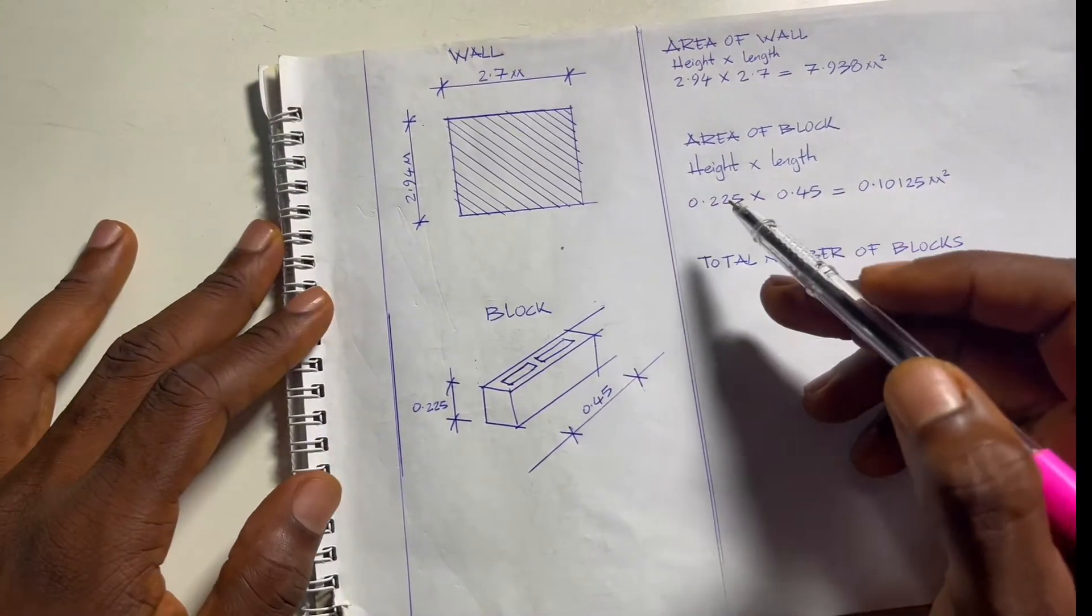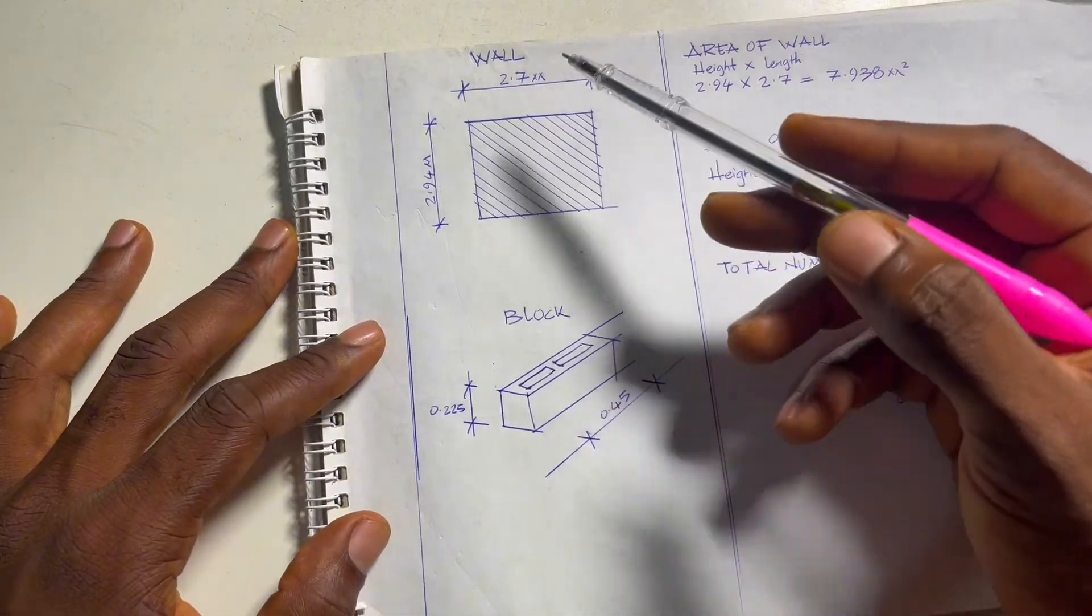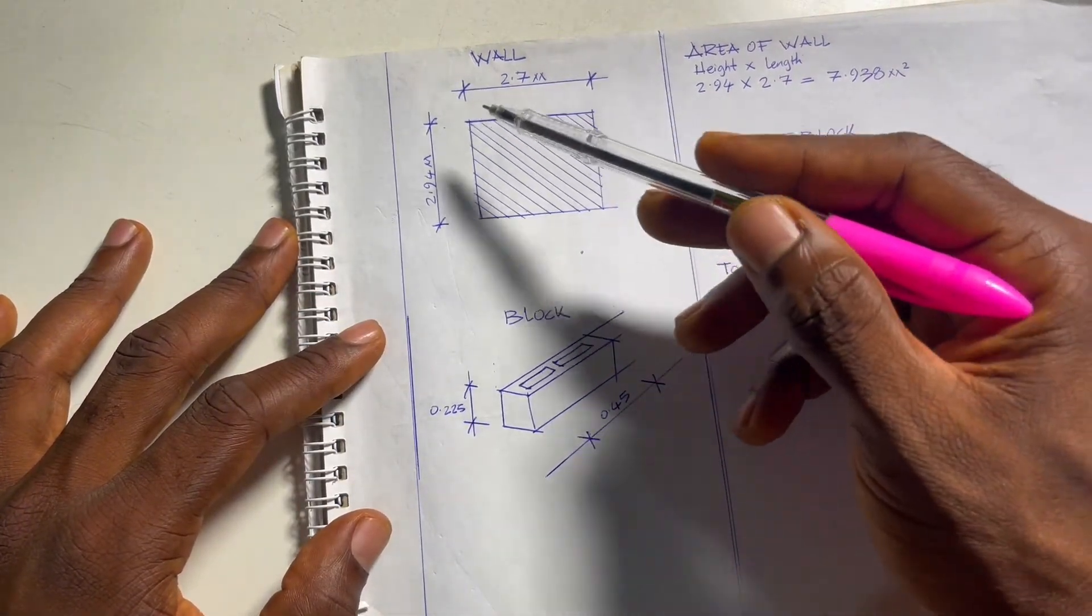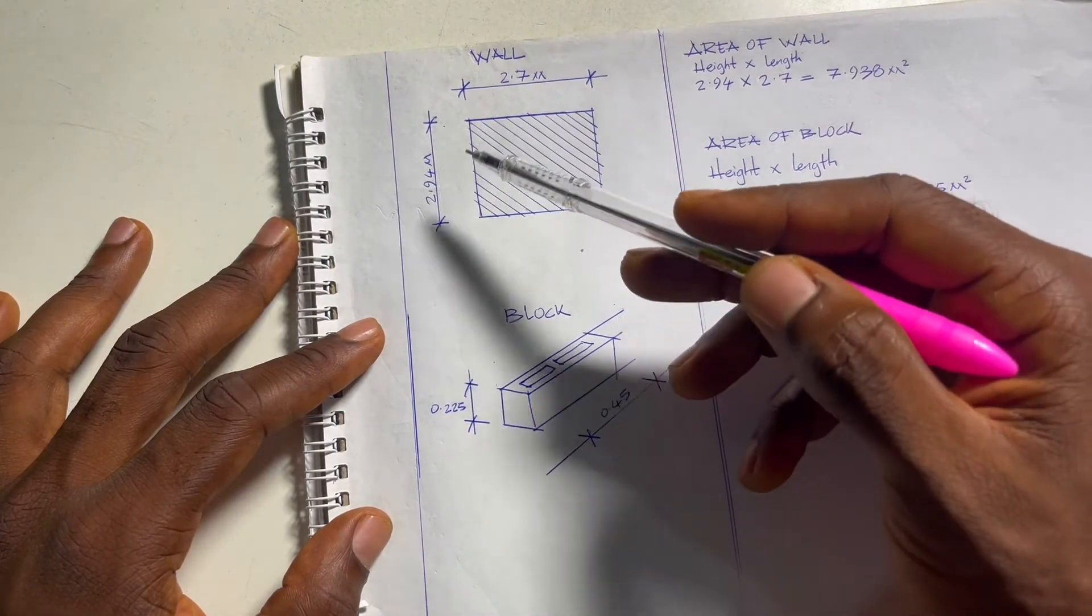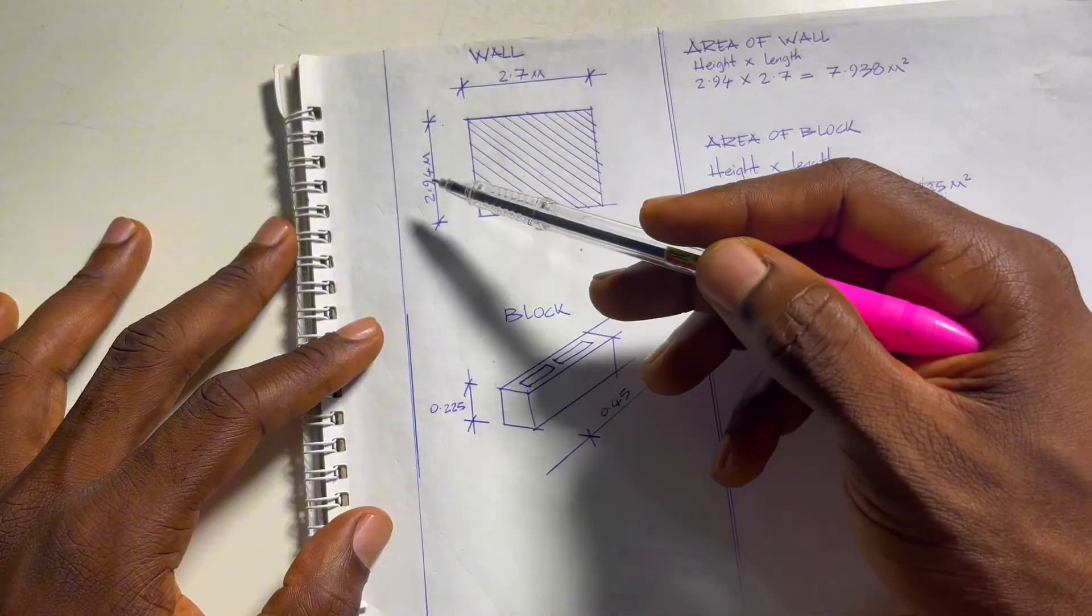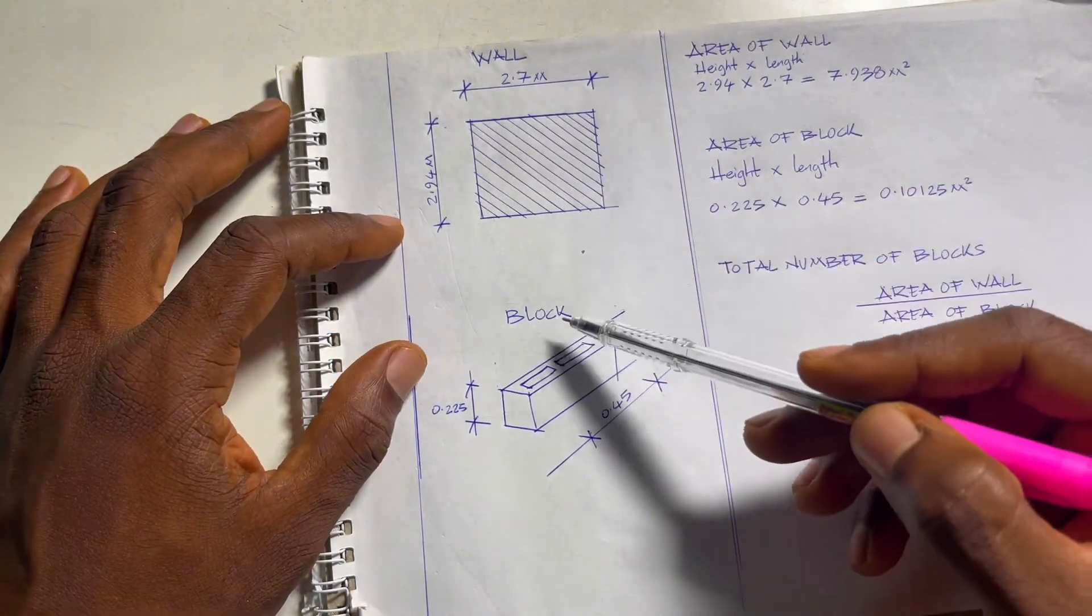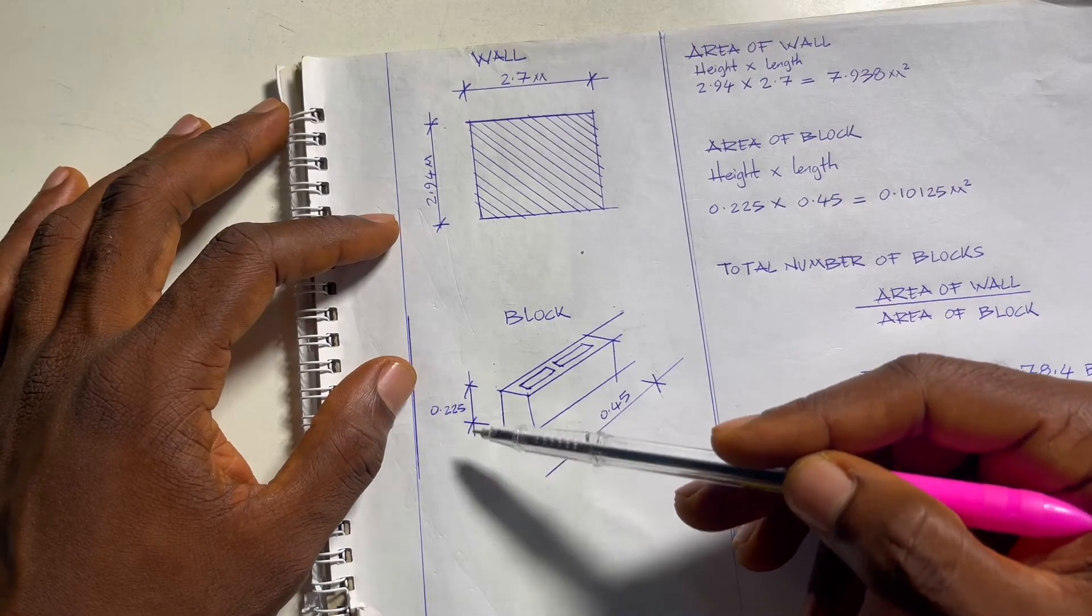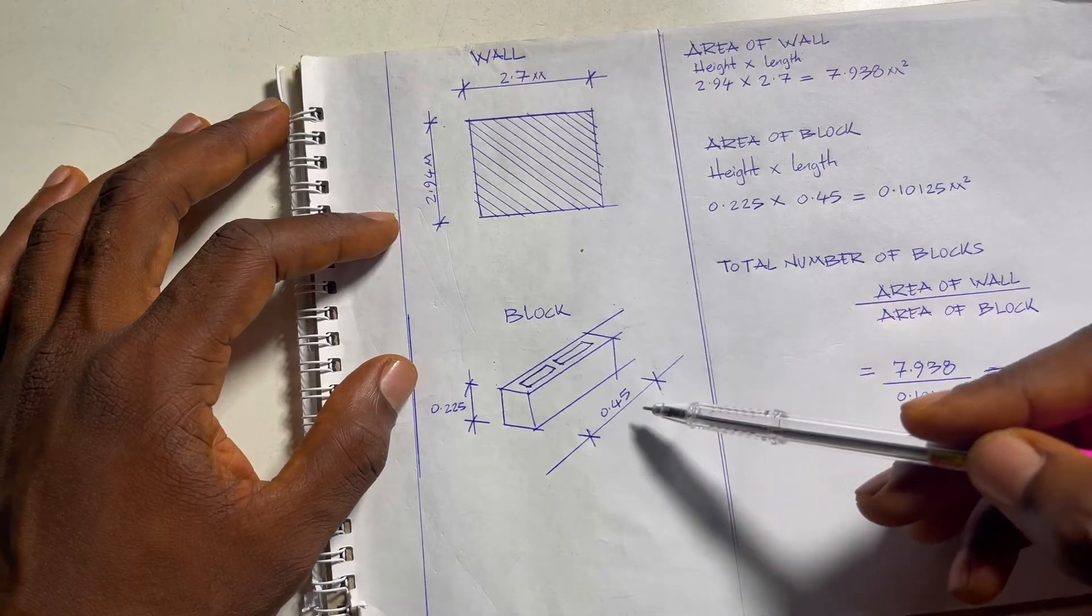We're going to calculate the total number of blocks. Now we have the height and length of the wall, same for the blocks. For the wall we have 2.94 meters height and 2.7 meters length. For the block we have 0.225 meters height and 0.45 meters length.